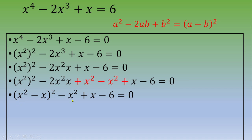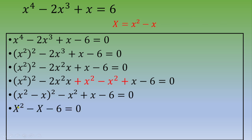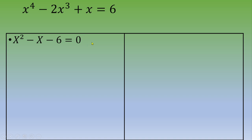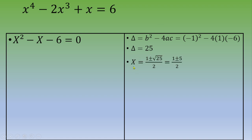Let's set capital X = x² - x. The equation becomes X² - X - 6 = 0. This is a quadratic equation. To solve it, we calculate the discriminant: Δ = b² - 4ac = (-1)² - 4(1)(-6) = 1 + 24 = 25.